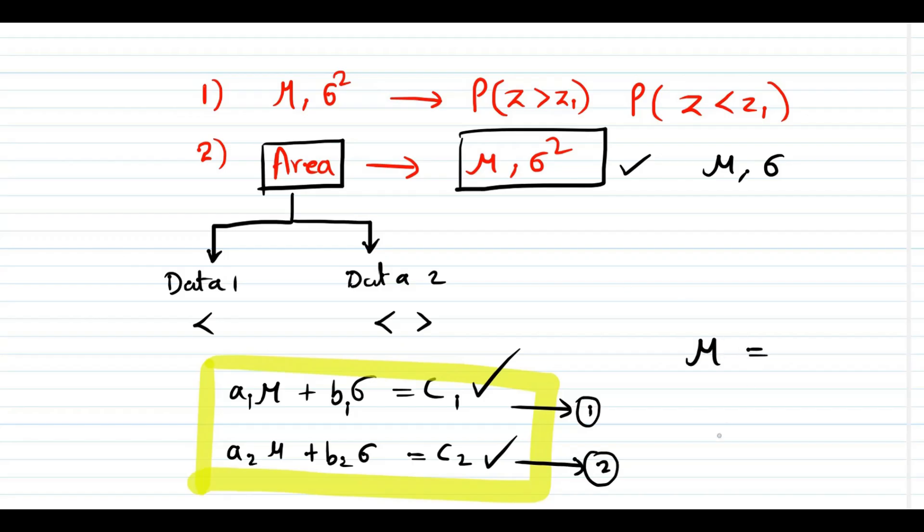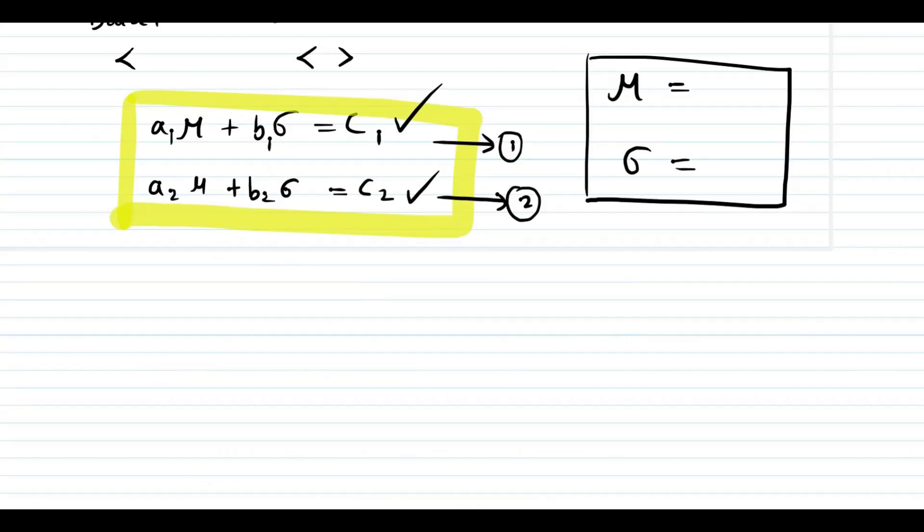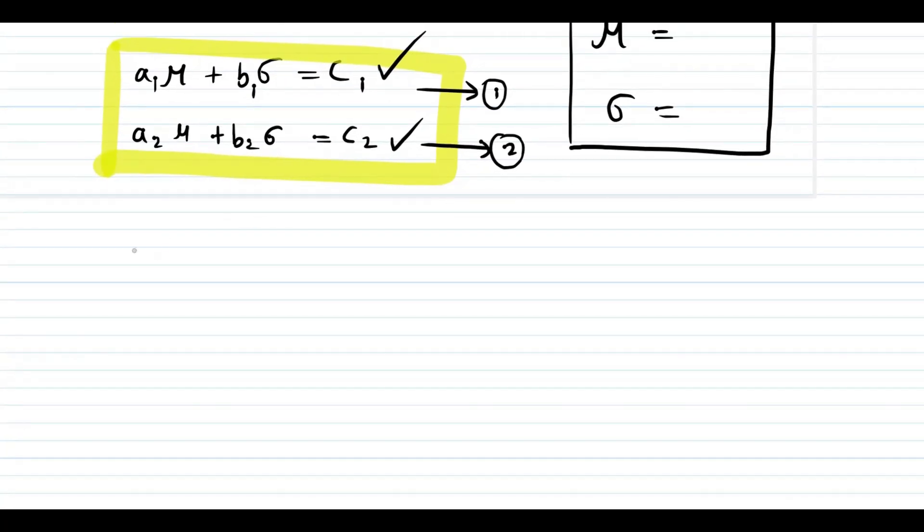Let us see how to do this with our calculator. Take your calculator, then press mode, and you can see EQN. Choose the option EQN. When you choose you can see unknowns.